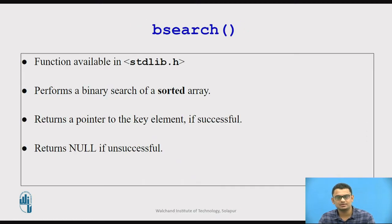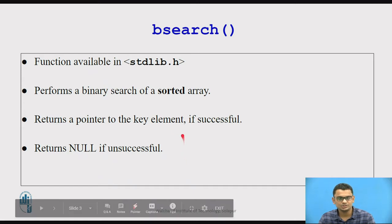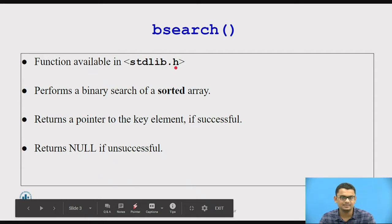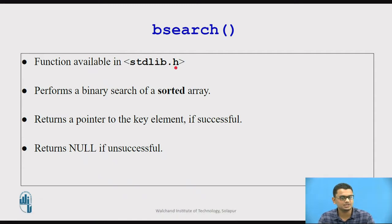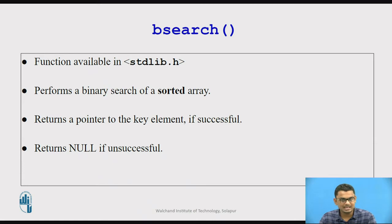The bsearch function has already been defined in the header file stdlib.h. It is a standard inbuilt function available in the standard library. It performs a binary search on a sorted array. Before we use this function, we should know that the input we are giving to it should be in sorted order.